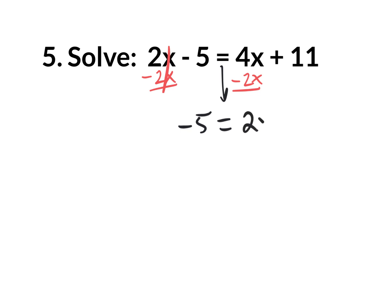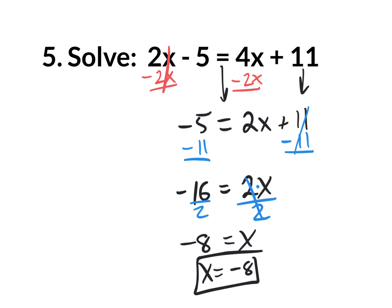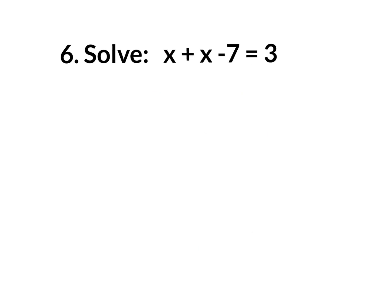So my new equation has negative 5 on the left side, and 4 take away 2 is 2x, plus 11. Now I still need to get x by itself, so I get rid of the plus 11 by doing the opposite — subtract 11 on both sides. I get negative 16 equals 2x, which means negative 16 equals 2 times x. To get rid of that multiplication of 2, divide by 2 on both sides. Final answer: negative 8 equals x, or x equals negative 8.